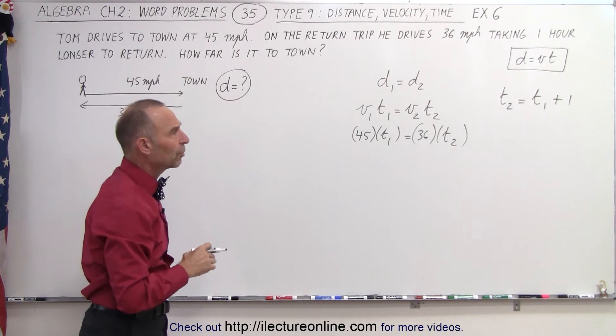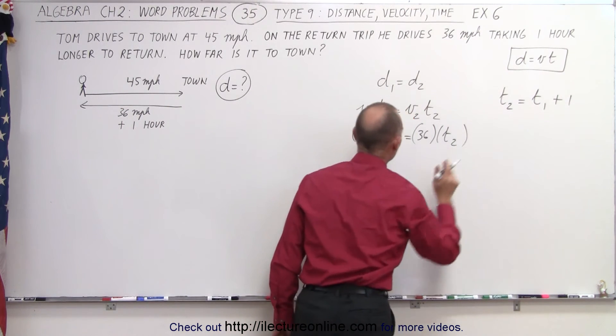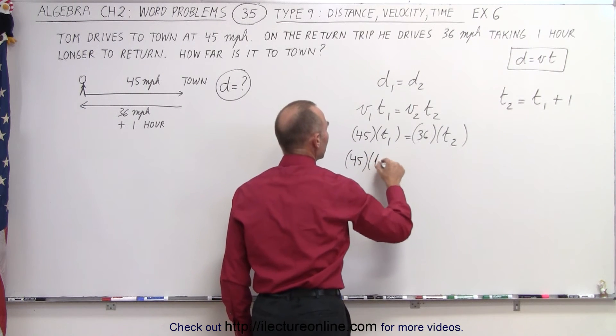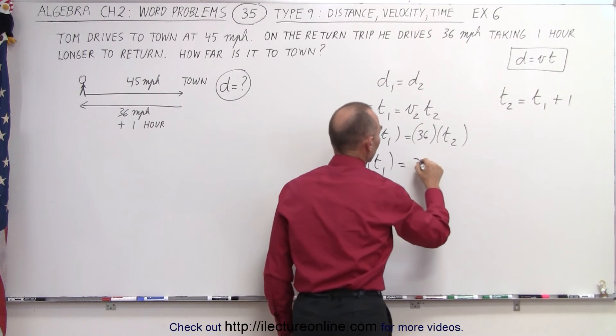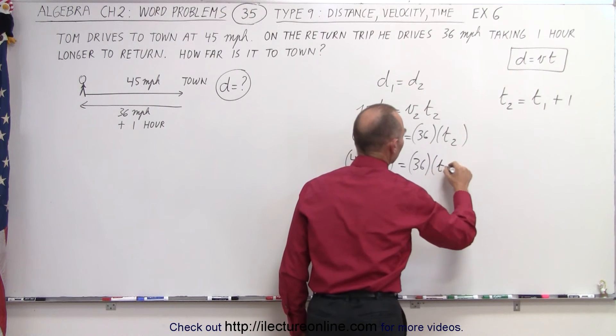And so what we can do now is replace t₂ by what t₂ is equal to in terms of t₁ and plug that in here. So now we have 45 times t₁, which represents the time to get to town, is equal to 36 times t₂, which is t₁ plus one.